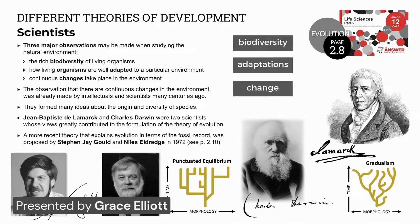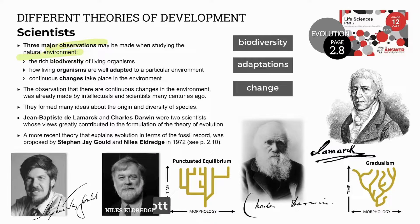Scientists made three main observations when studying the natural environment. They observed the enormous biodiversity of all living organisms. They also observed adaptations of all organisms to their particular environment, and the continuous changes that occur in each environment.